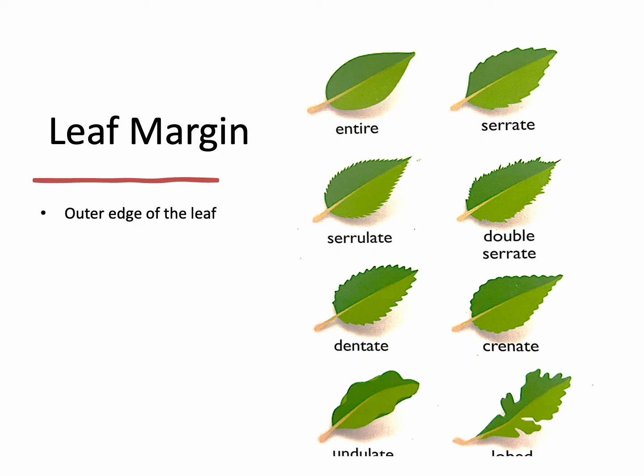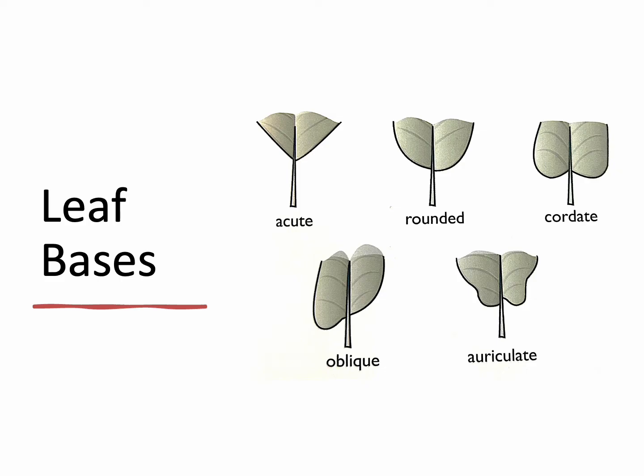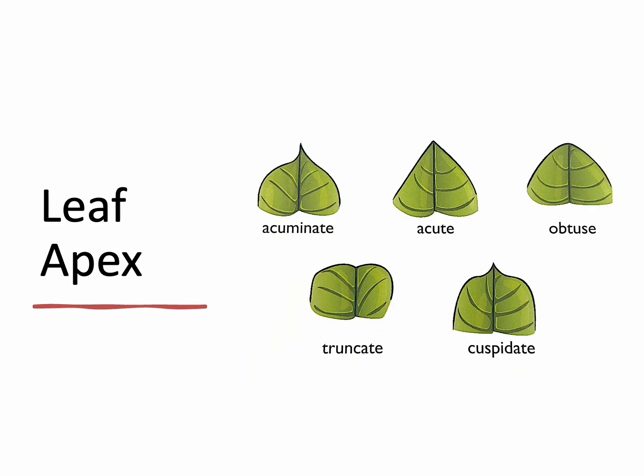Leaf bases are where the leaf attaches to the stem — the angle of attachment. Are they acute, coming to a point? Are they rounded? Cordate — rounded on both sides? Oblique and auriculate are also options. And the leaf apex is the tip of the leaf and its angle. Obtuse, acute, rounded — you pretty much just have to memorize them.